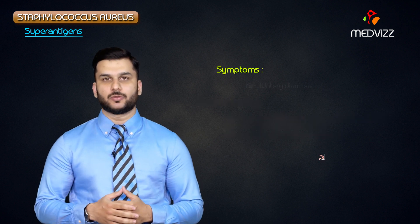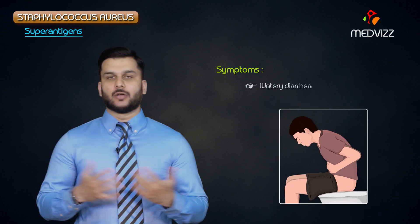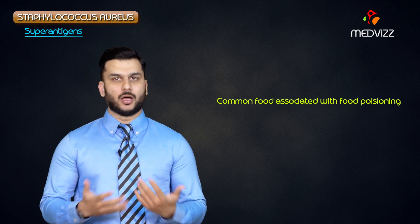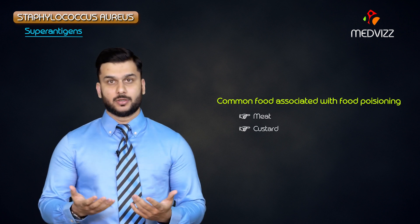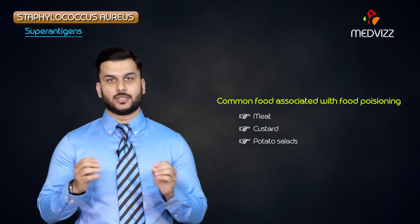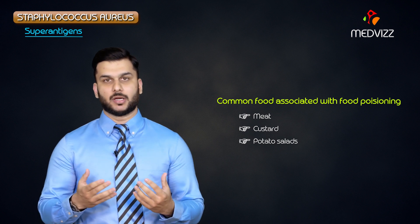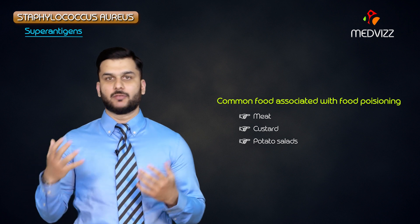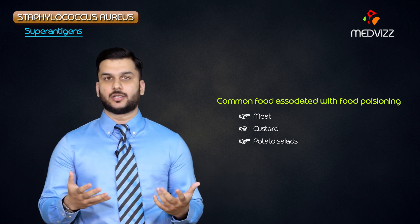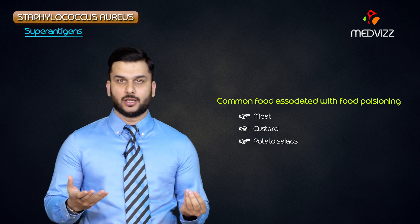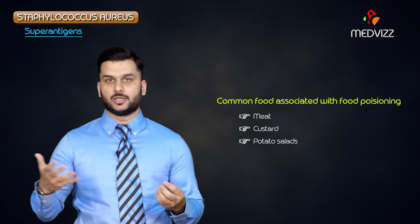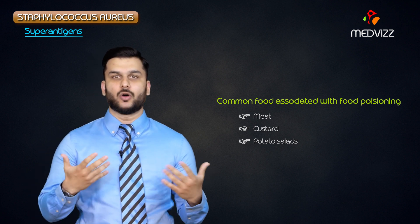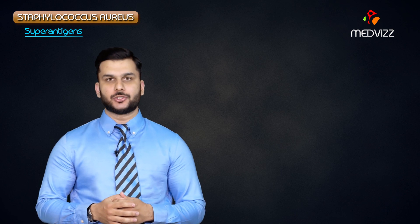The foods classically associated with Staph aureus food poisoning are meat, custards, and potato salads. In exam vignettes, they will often use scenarios like a family going on a hiking picnic who all develop diarrhea shortly after. If the onset is very early — within one to six hours — you should think of Staphylococcus aureus.